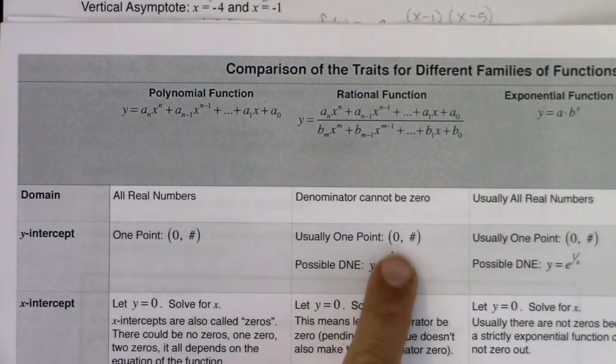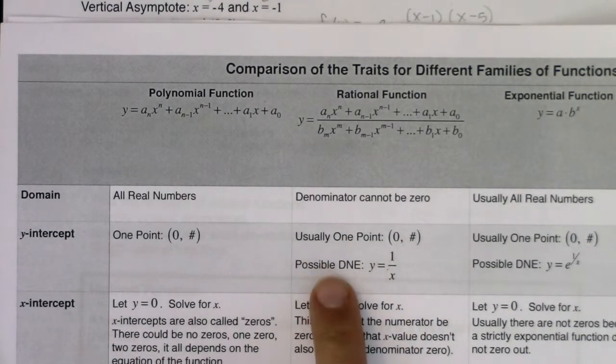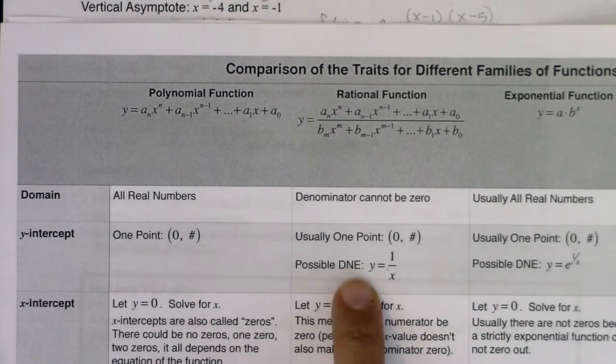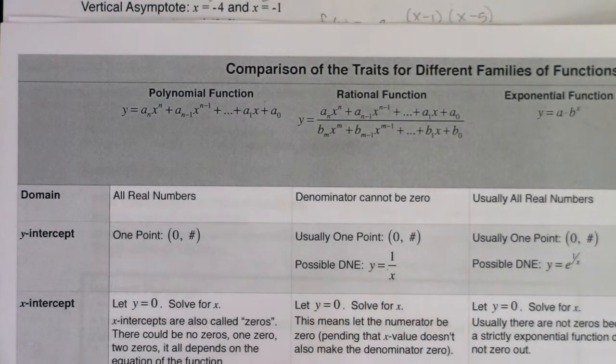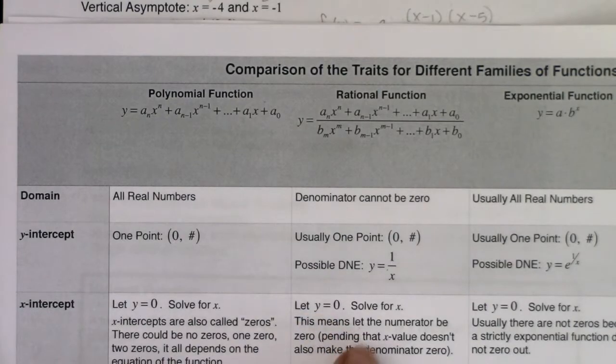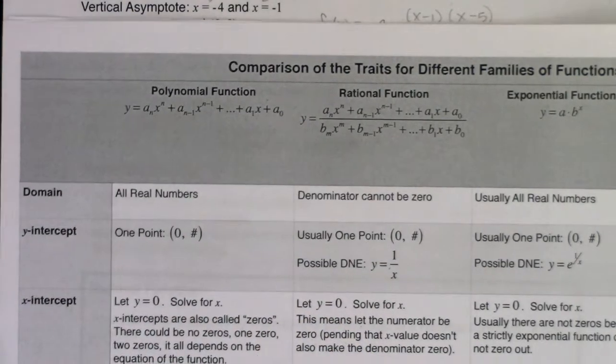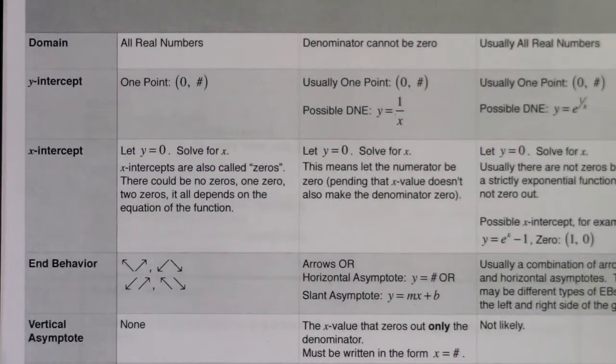I say usually because sometimes your y-intercept might not exist like on the reciprocal function. For x-intercepts, let y equal zero. And that means look for when the numerator only zeroes out. For your end behavior, you have a lot of options. You have four cases.